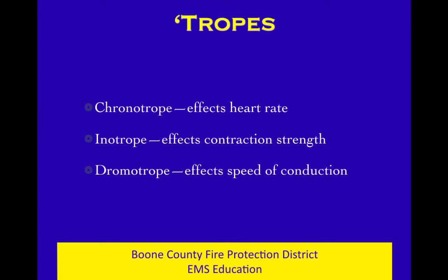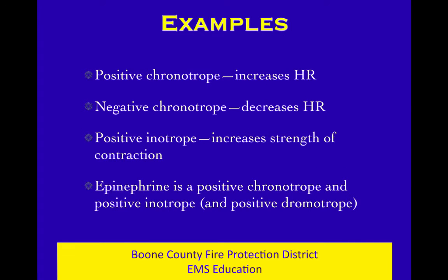A dromotrope is about the speed of conduction of the impulse in the cardiac conduction system. A positive dromotrope speeds up conduction through the cardiac conduction system; a negative dromotrope slows it down. So: positive chronotrope increases heart rate, negative chronotrope decreases it, positive inotrope increases strength of contraction. Epinephrine is an example of a positive chronotrope, a positive inotrope, and a positive dromotrope — epi is positive for all three.